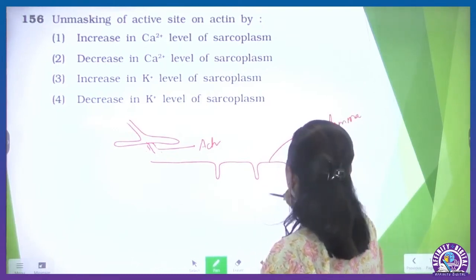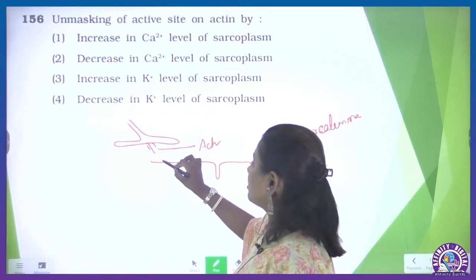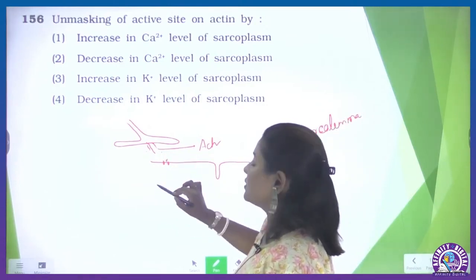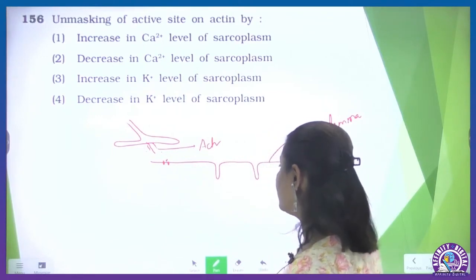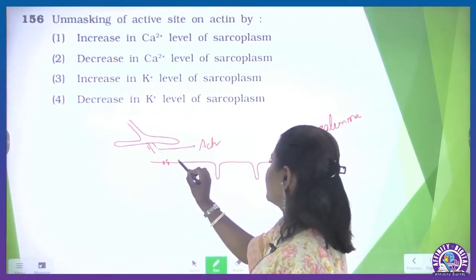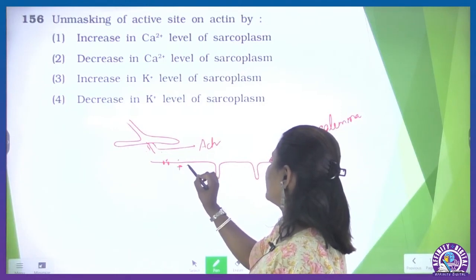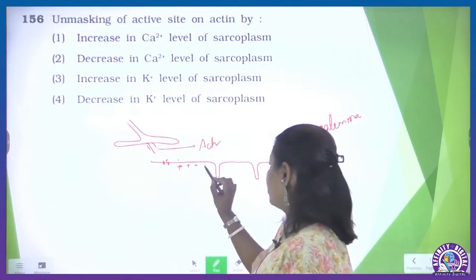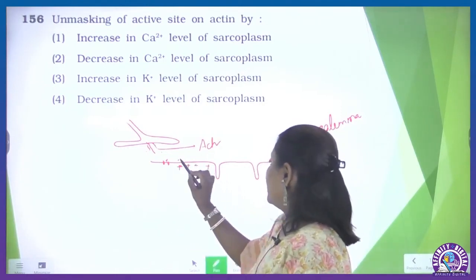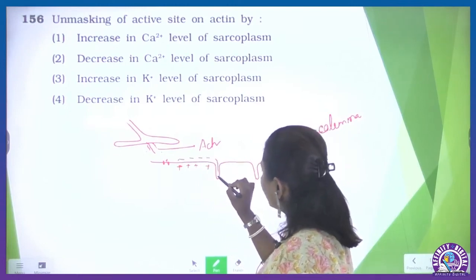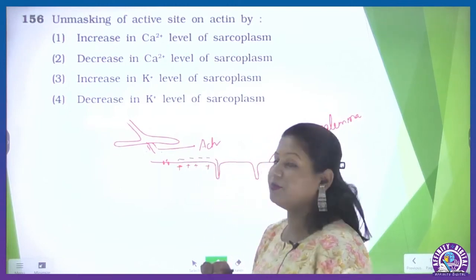In the sarcolemma, when acetylcholine is released, there are receptors for it. Acetylcholine is received there, and it causes a sensation — the inner side becomes positive, just like the depolarization method, and the outer side becomes negative. And this is transmitted through T-tubules.